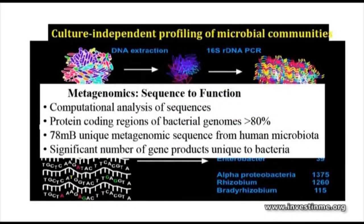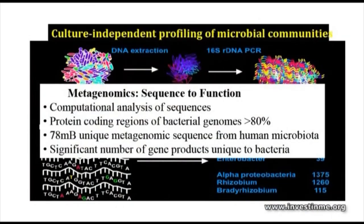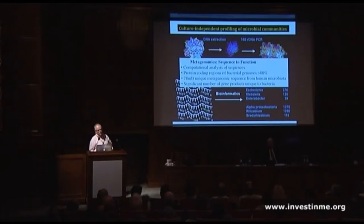This leads back to what are all these genes doing — what do they tell us about the functionality of the microbes? We have metagenomics, which takes all this sequence information and extrapolates it to function. It relies heavily on the fact that about 80% of bacterial genes actually encode a functional protein, so identifying a gene is a pretty good indication it's functional. A significant number of gene products identified from our microbiota are actually unique to them — we don't have these genes. There's an important genetic complementarity between what we can do and what our gut microbes can do.